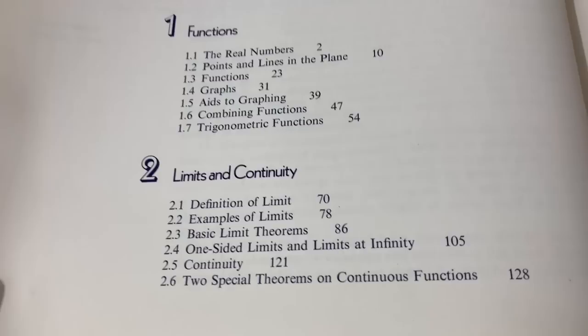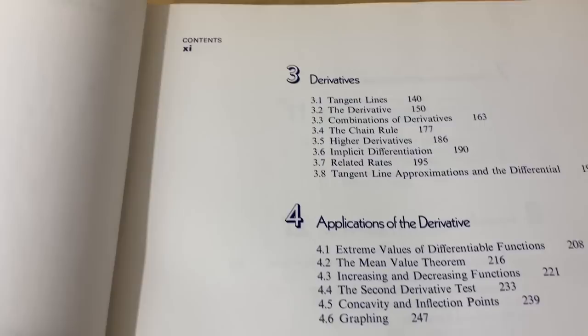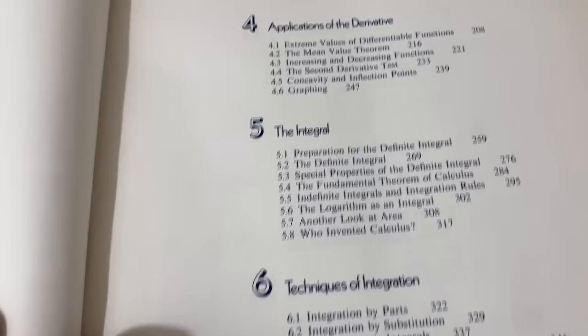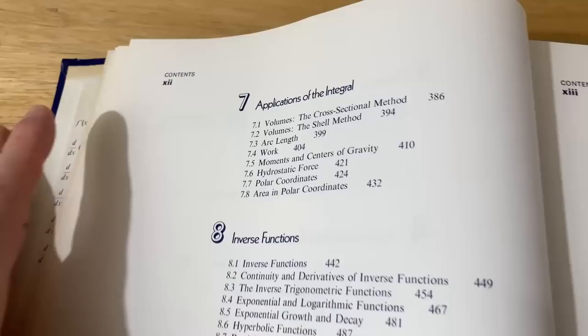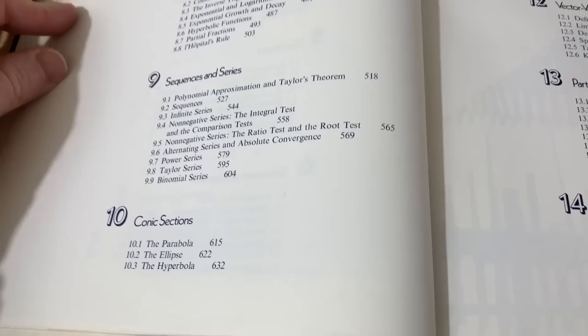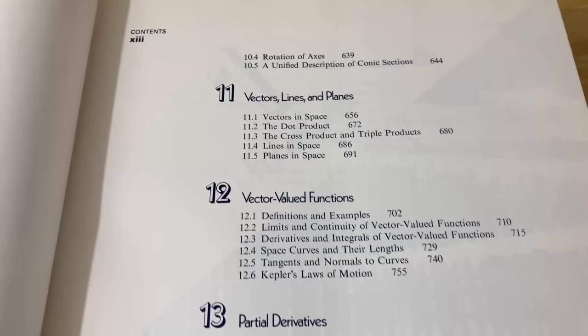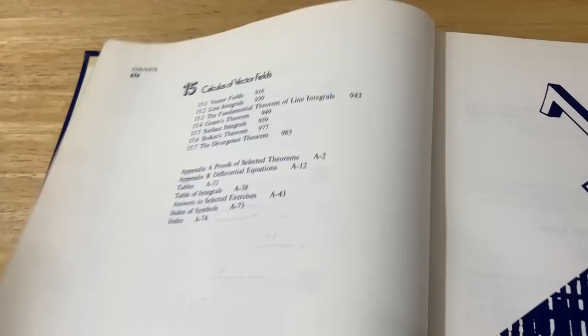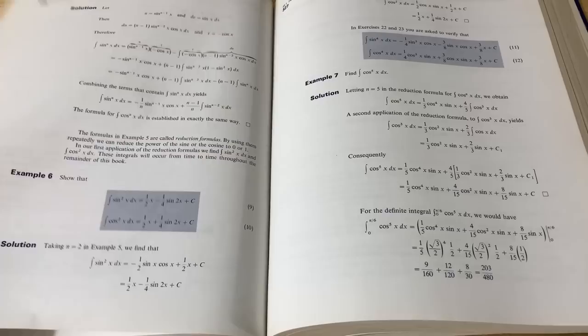Calculus with Analytic Geometry. Here's a very brief look at the contents. We've got functions, limits and continuity, derivatives, applications of the derivative, the integral, techniques of integration. So far, everything is super standard. It's pretty much the same as the modern calculus books used today. Applications of the integral, inverse functions, sequences and series, conic sections, vectors, lines and planes, vector-valued functions, partial derivatives, multiple integrals, and then calculus of vector fields. So you could take three calculus courses using a book like this. This is enough content for calculus one, calculus two, and calculus three.